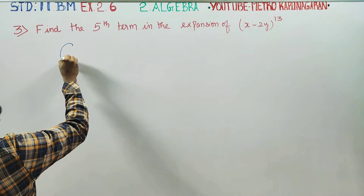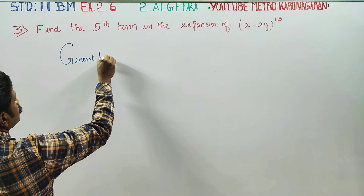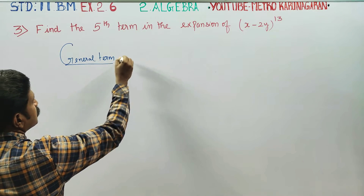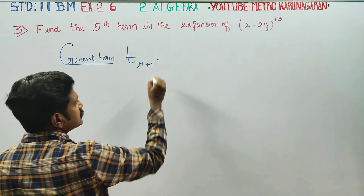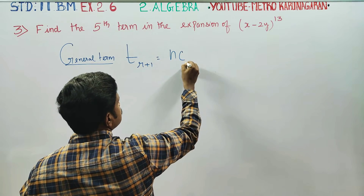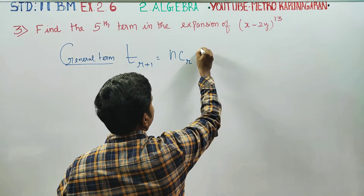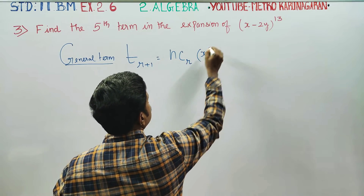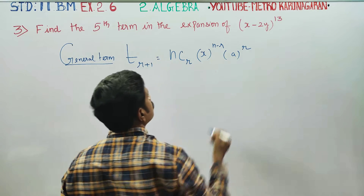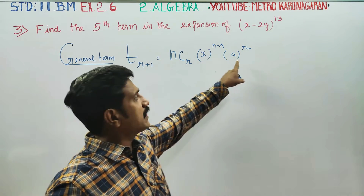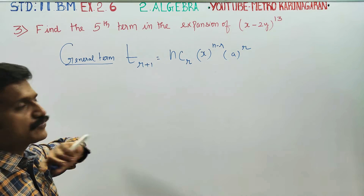General Term. To find any term, you must use this formula: T(R+1) = NCR · X^(N-R) · A^R. Here X is the first term and A is the second term. This is the General Term formula.